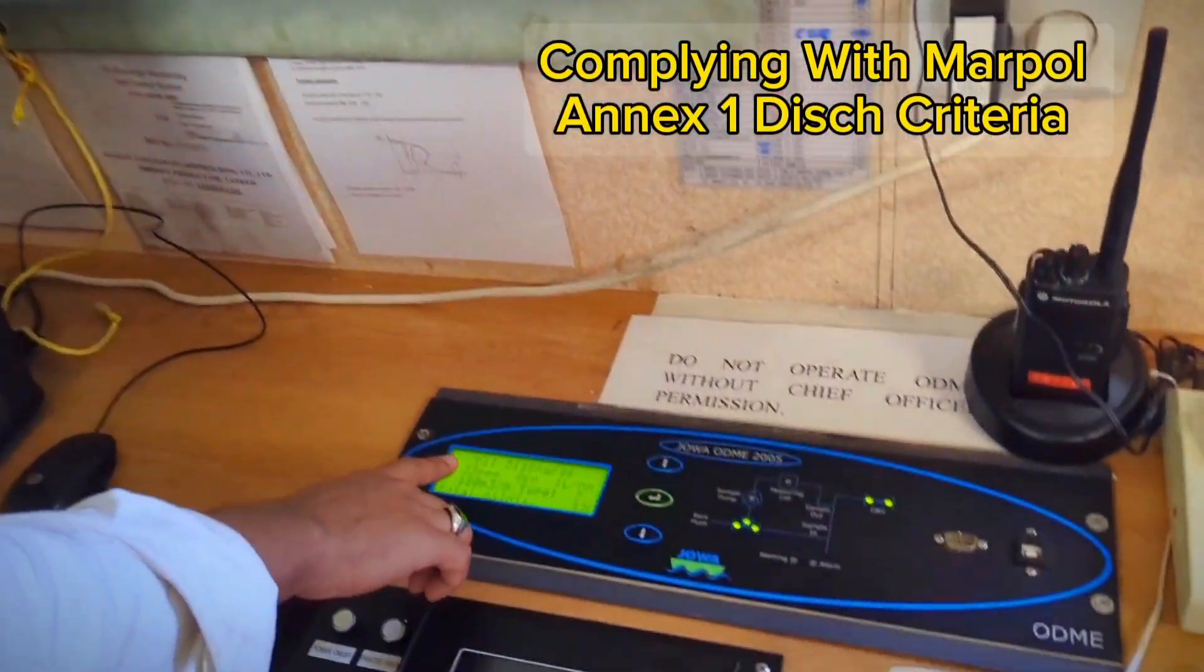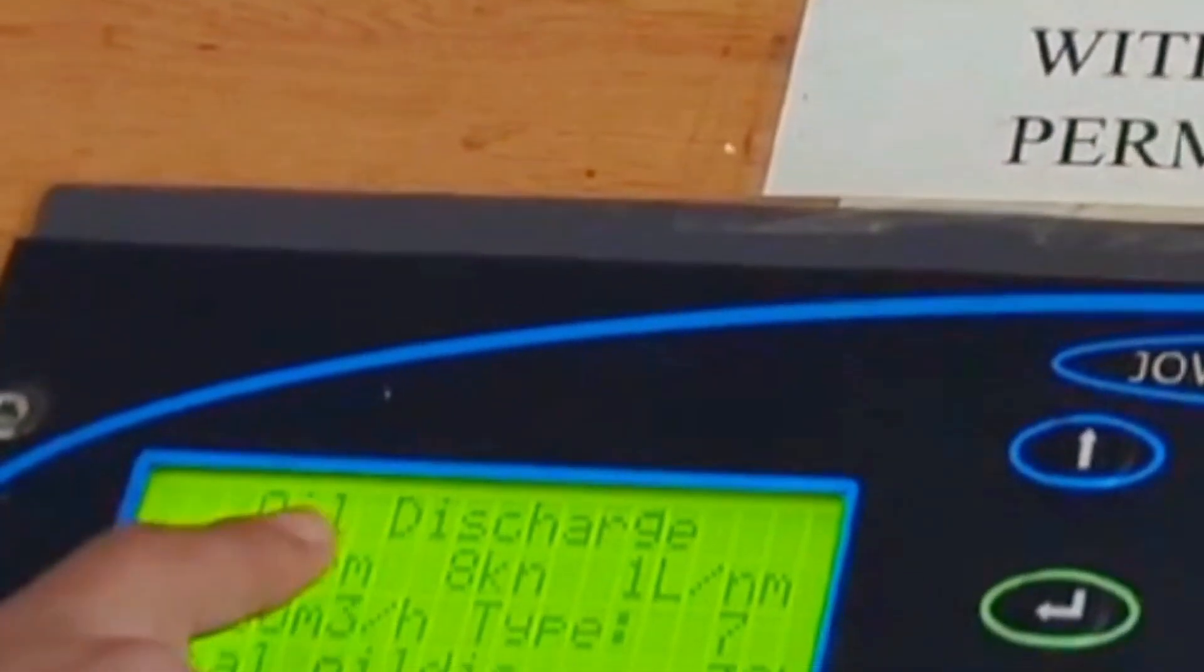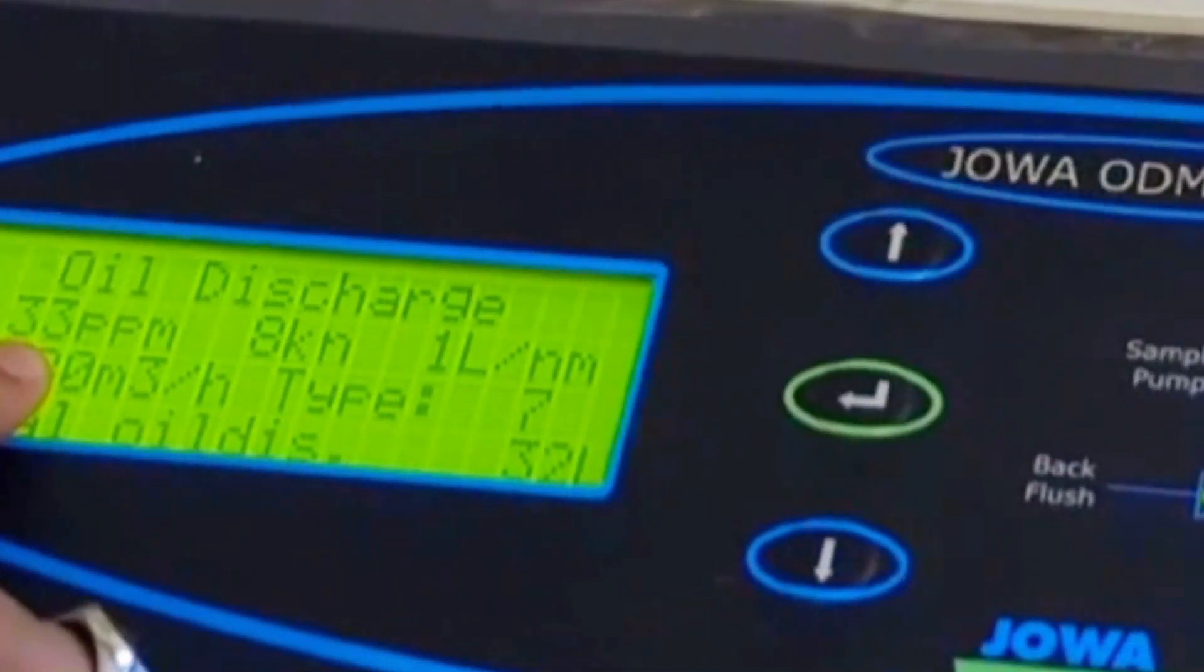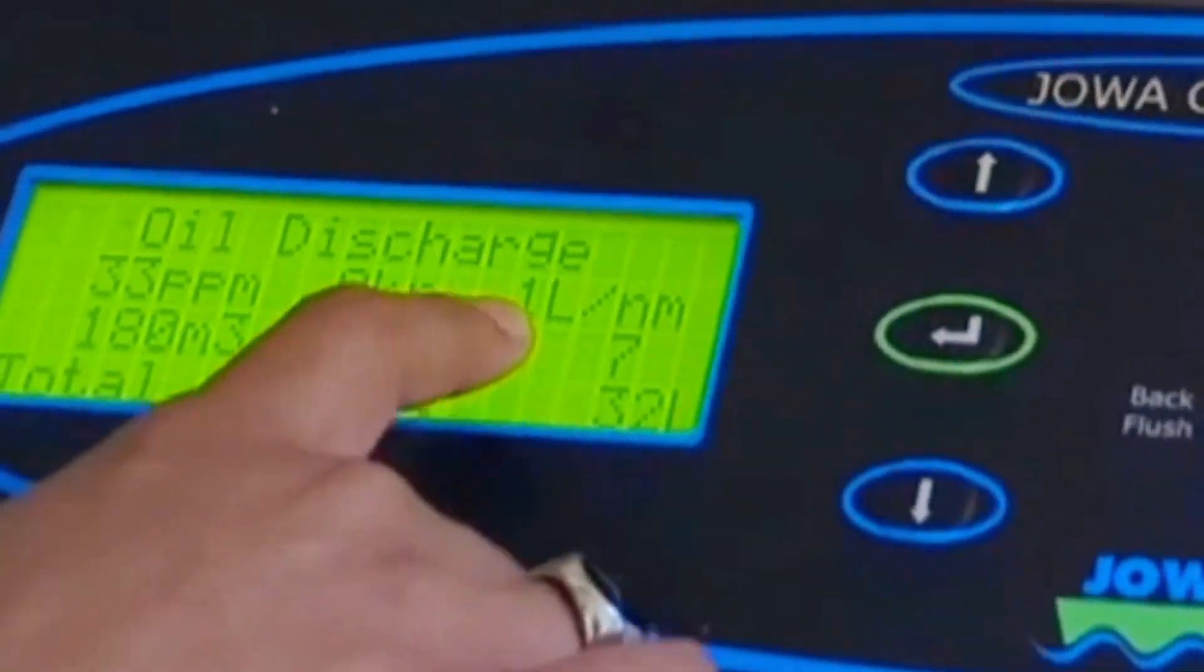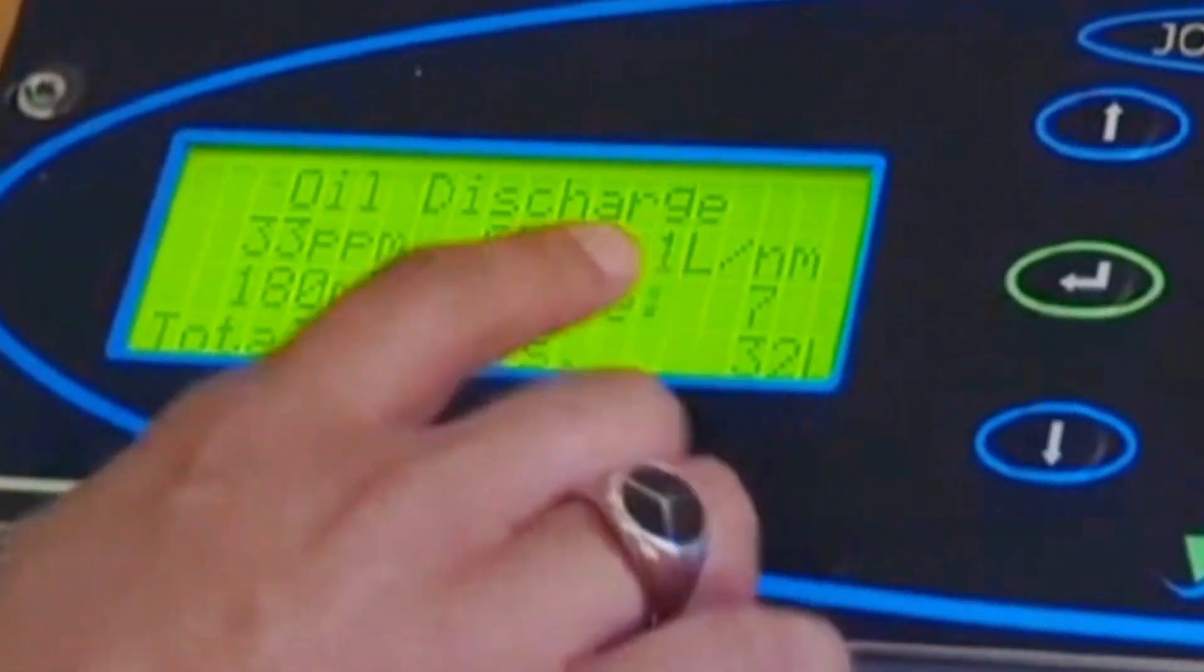As you can see my ODME is running and this is oil discharge 33 PPM, 8 knot speed - this is vessel's speed, 1 liter per nautical mile. This is the present situation.